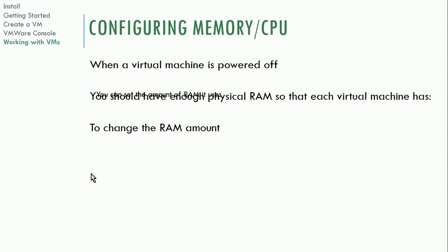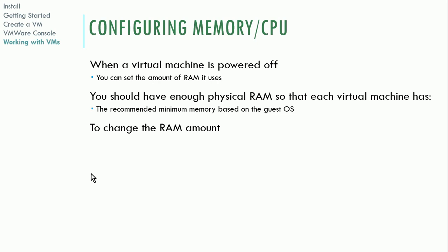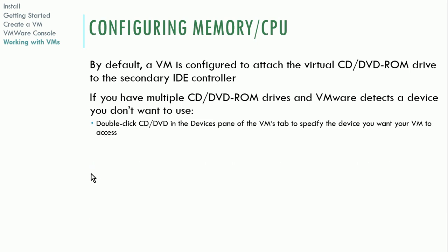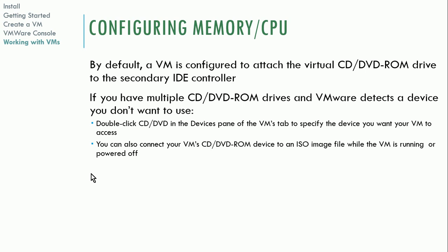For configuring memory and CPU, when the machine is powered off you can change the amount of RAM allocated. By default, the VM attaches the virtual CD/DVD-ROM to the secondary IDE controller, but if you have multiple CD-ROM drives, VMware detects them. Depending on your VMware version, you'll see icons for optical drives in the bottom or upper right. If you put a CD in and want to access it from your virtual machine, just double-click the CD-ROM drive icon and it will pass it through to the VM.